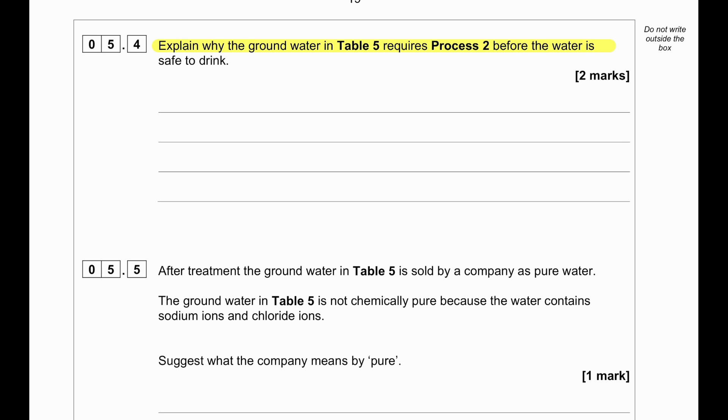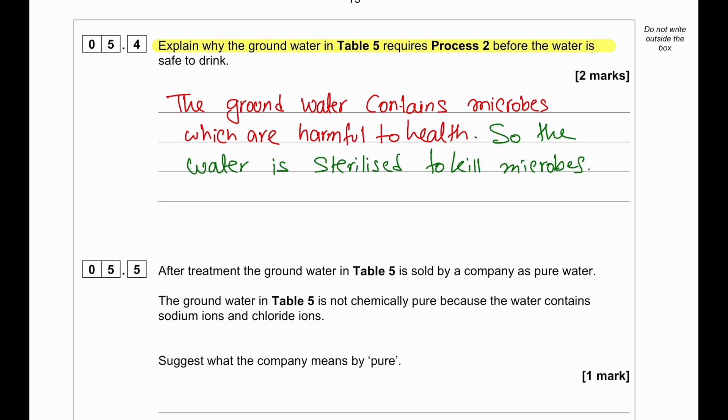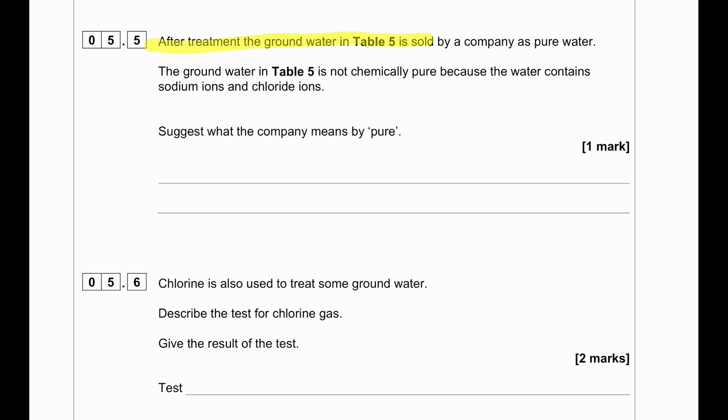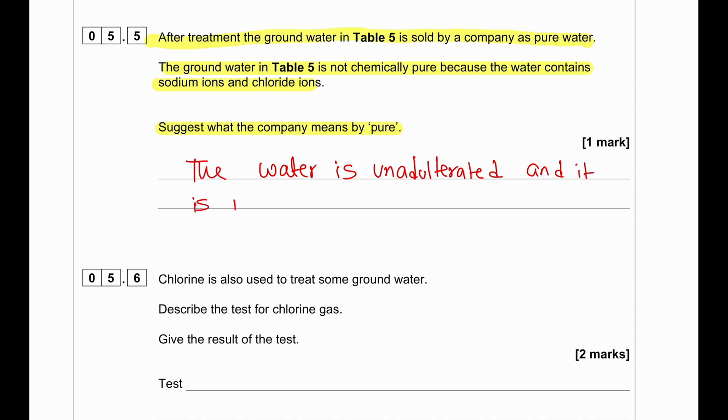Explain why the groundwater in Table 5 requires process 2 before the water is safe to drink. The groundwater contains microbes which are harmful, so the water requires sterilization before drinking to destroy the microbes. After treatment, the groundwater in Table 5 is sold by a company as pure water. The groundwater in Table 5 is not chemically pure because the water contains sodium ions and chloride ions. What the company means by pure is that the water is unadulterated and it is in its natural state.